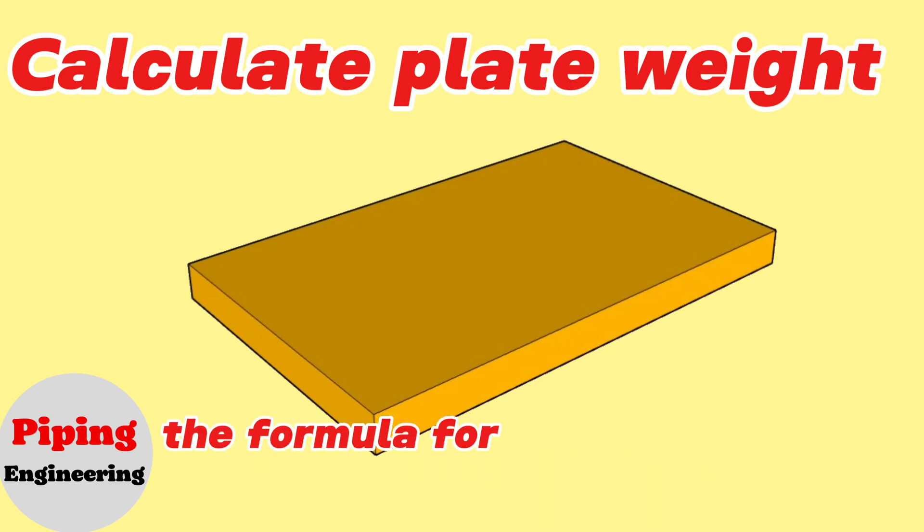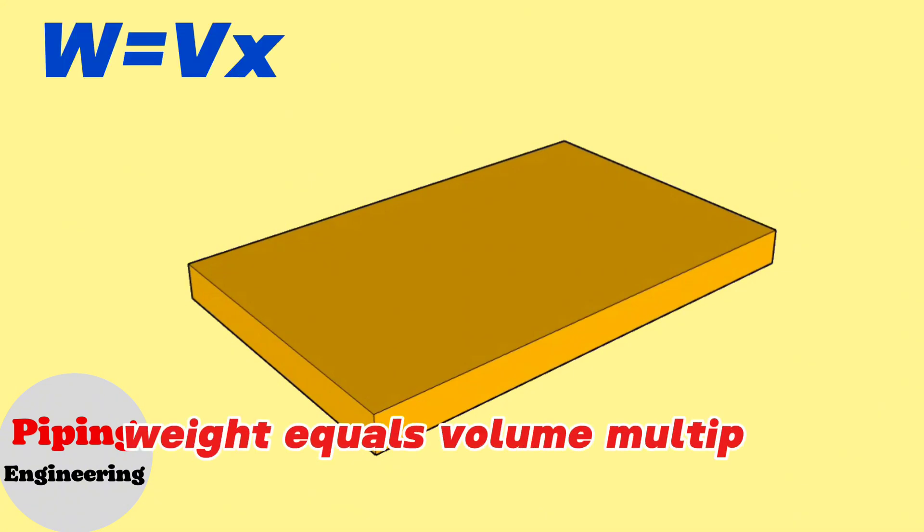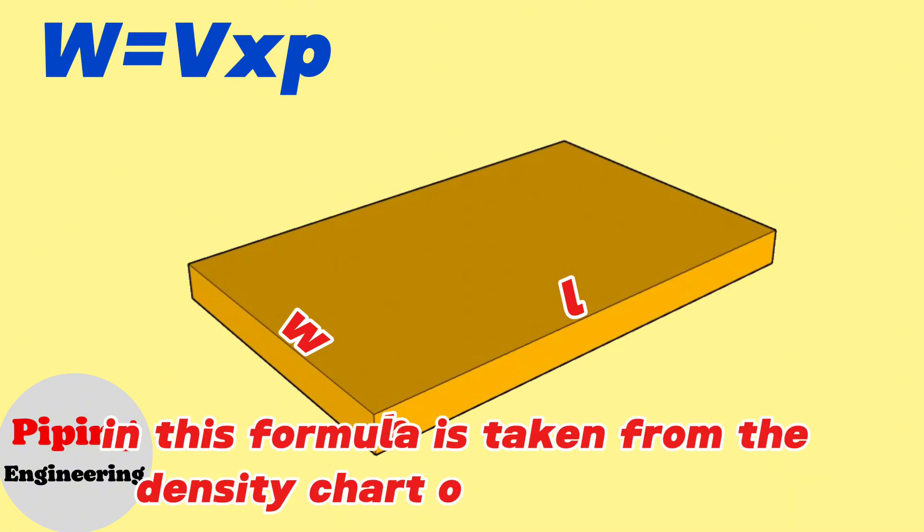The formula for finding the weight of the rectangle form iron steel is as follows. Weight equals volume multiply the density of the iron. To calculate the volume of any detail, it is necessary to multiply its width, length, and height together.